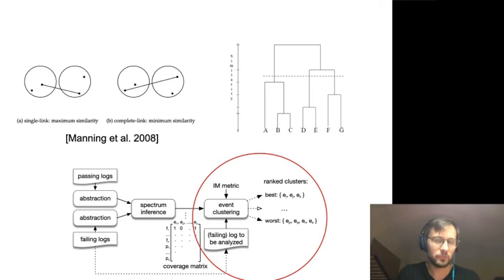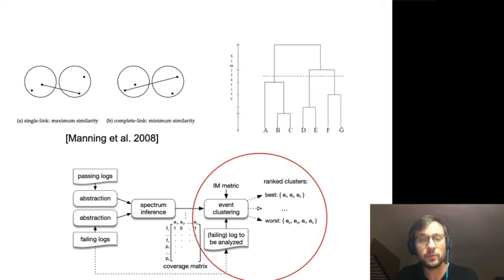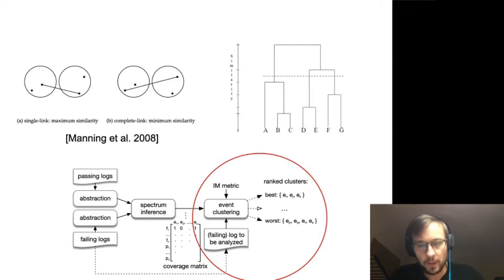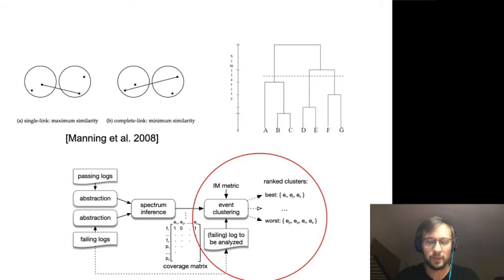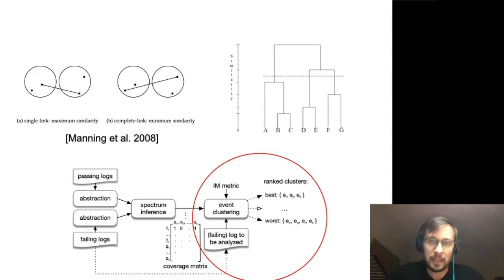For the clustering step we use hierarchical agglomerative clustering with complete linkage, and we keep merging clusters until we reach the standard deviation of the obtained event scores in the log. You can read more about this in the paper.